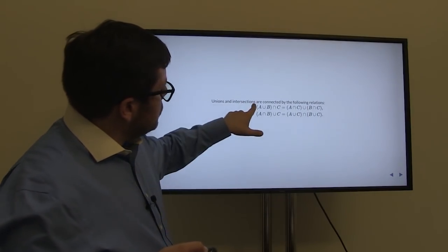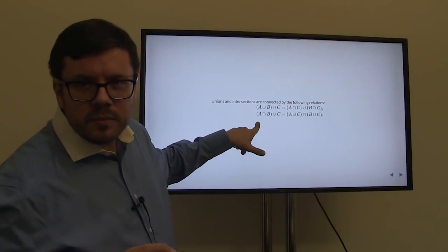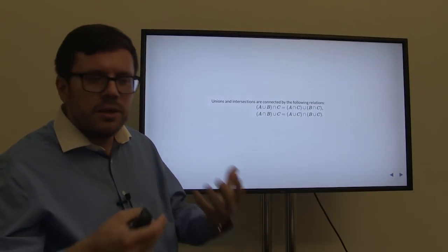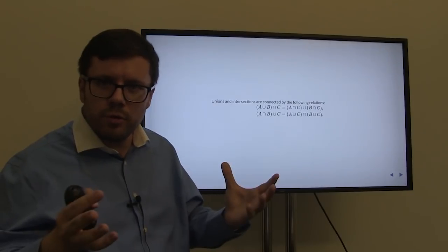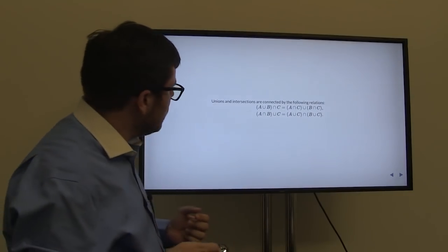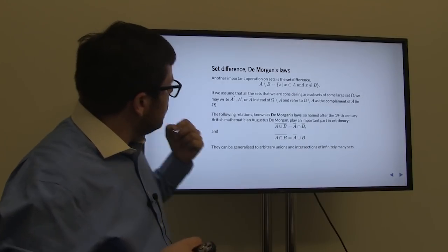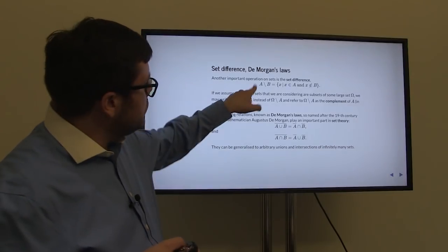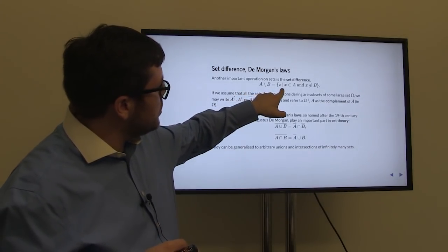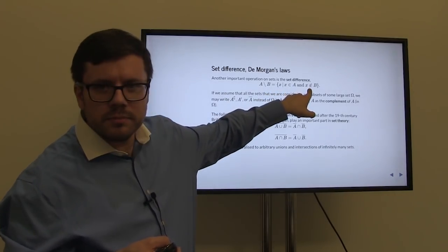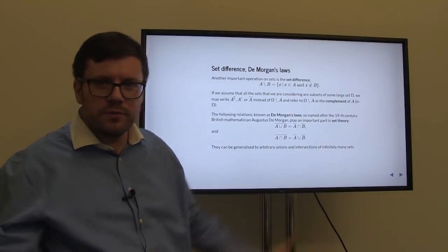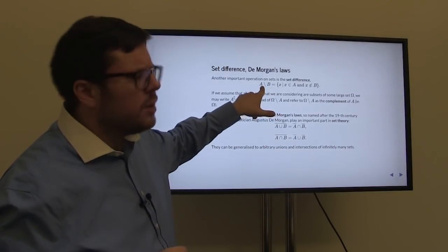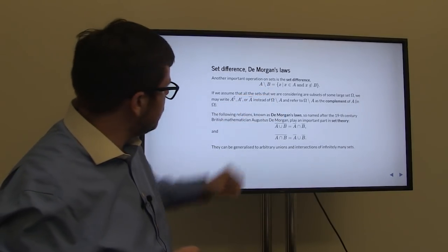Unions and intersections are connected by formal laws. Just as in arithmetic we can write down formulas, we can work with formulas in set theory. Another very useful operation on sets is the set difference. The difference between sets A and B is the set of those elements that are in A but not also in B — we take all elements of A and throw away the elements of B.